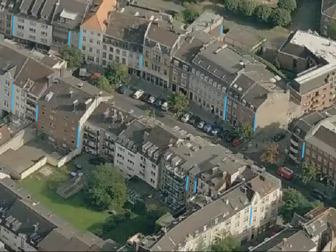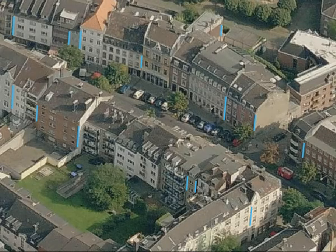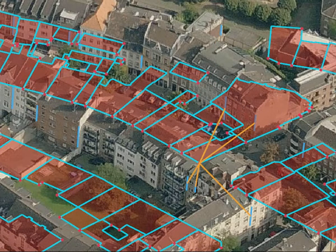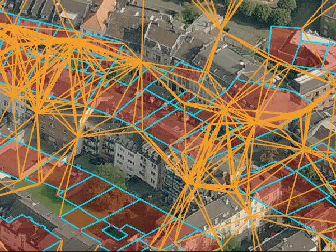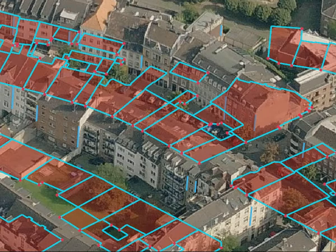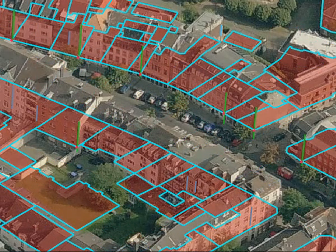The per-image registration process is based on correspondences between vertices of the cadastral map and vertical line segments as detected in the previous step. Based on the rough estimates of the projection parameters we find a set of possibly matching vertical line segments for each visible map vertex. Using RANSAC and a non-linear parameter optimization we then determine the remaining four extrinsic parameters.